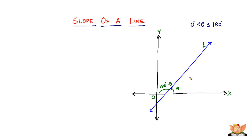Now consider the lines parallel to the X-axis. Imagine line L inclining more towards the X-axis until it coincides with it, making an angle of zero. Then the line L becomes parallel to the X-axis. On the other hand, the line can move towards the Y-axis and become at 90 degrees with the X-axis. So these are the two conditions apart from being inclined at any angle theta between zero and 90 degrees.